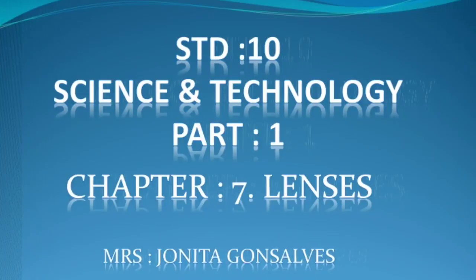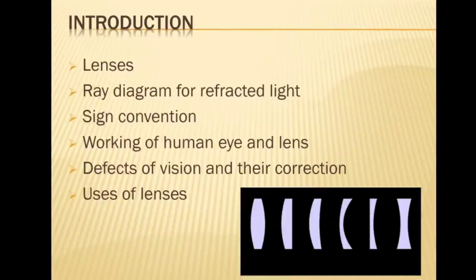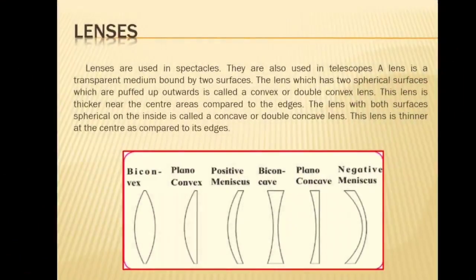Welcome, dear students, to Standard 10th class Science and Technology Part 1. We begin with the 7th chapter: Lenses. In this chapter we will learn about Lenses, Ray Diagram for Refractive Light, Sign Convention, Working of Human Eye and Lens, Defects of Vision and Their Correction, and Uses of Lenses. You have seen lenses used in day-to-day life.